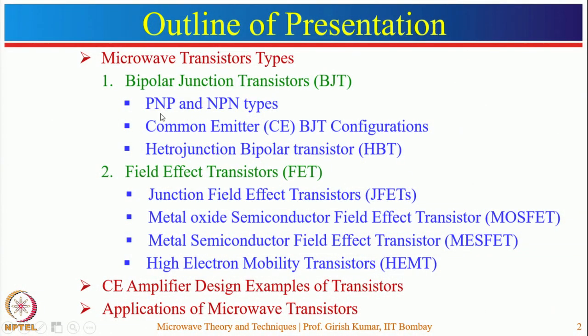Depending upon that, transistors are divided into two categories: bipolar junction transistor and field effect transistor. In case of bipolar junction transistor, the output current is controlled by the input current. Current conduction is due to two types of charge carriers — electrons and holes. Depending upon the type of charge carriers, they are divided into PNP and NPN type. In PNP, holes are the majority carriers; in NPN, electrons are the majority carriers.